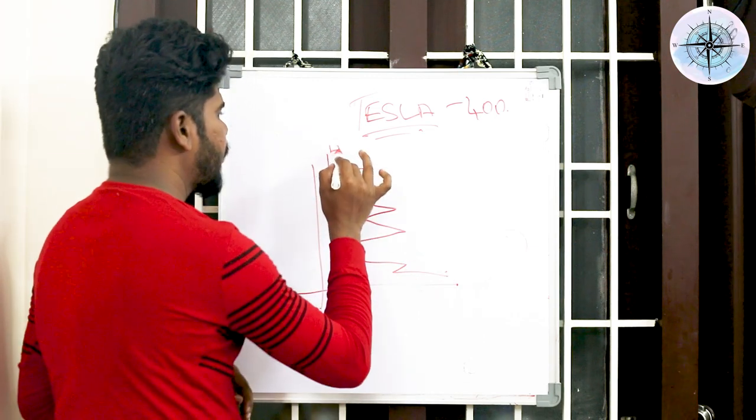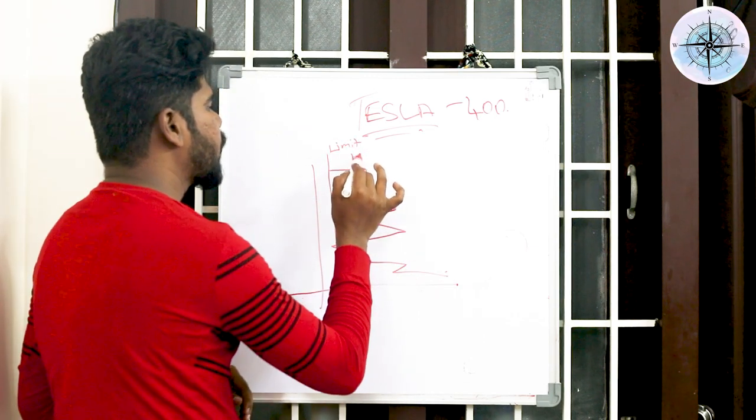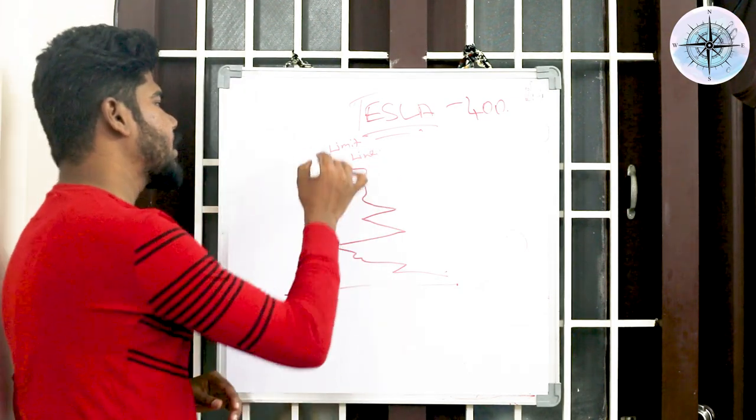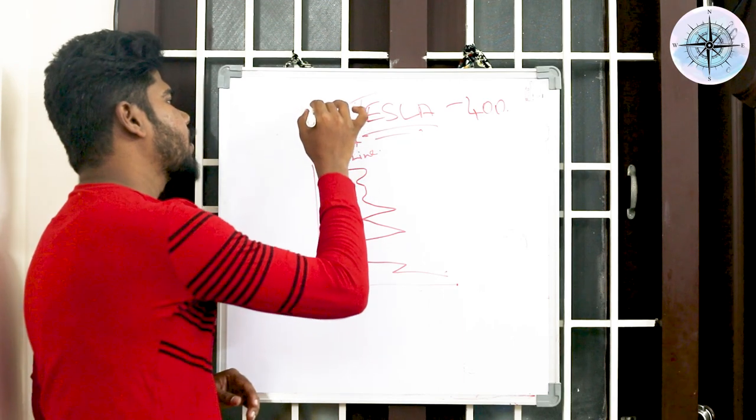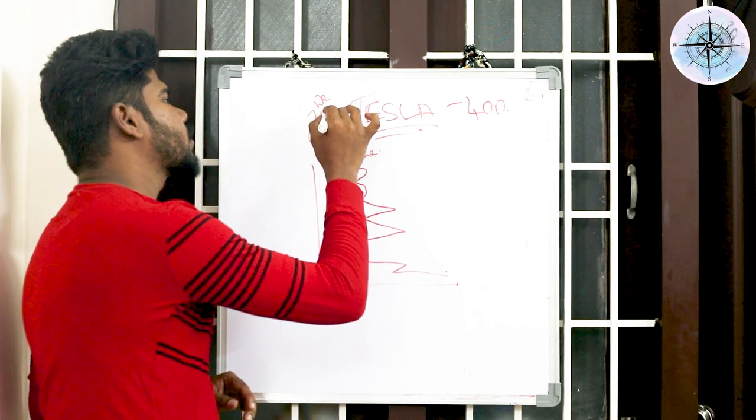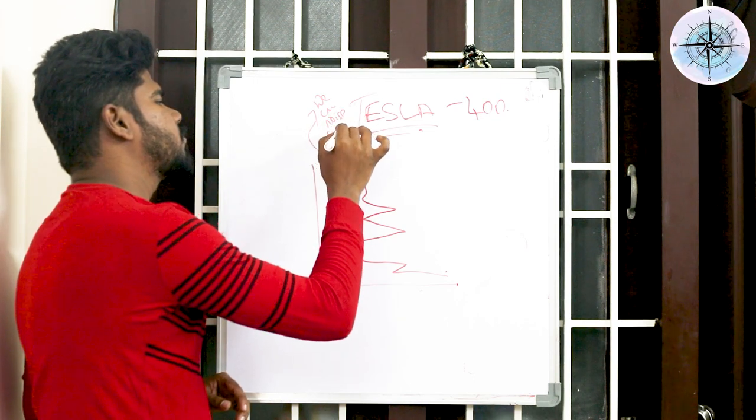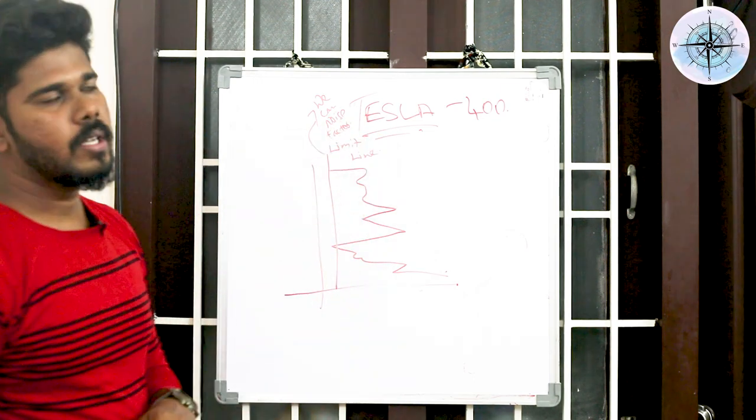This is a limit line. You can see it in the reports and also we have shared you the manual. Limit line is the place where we can consider it as noise factor. Most probably it won't be a noise factor, but we can consider it as a noise factor.